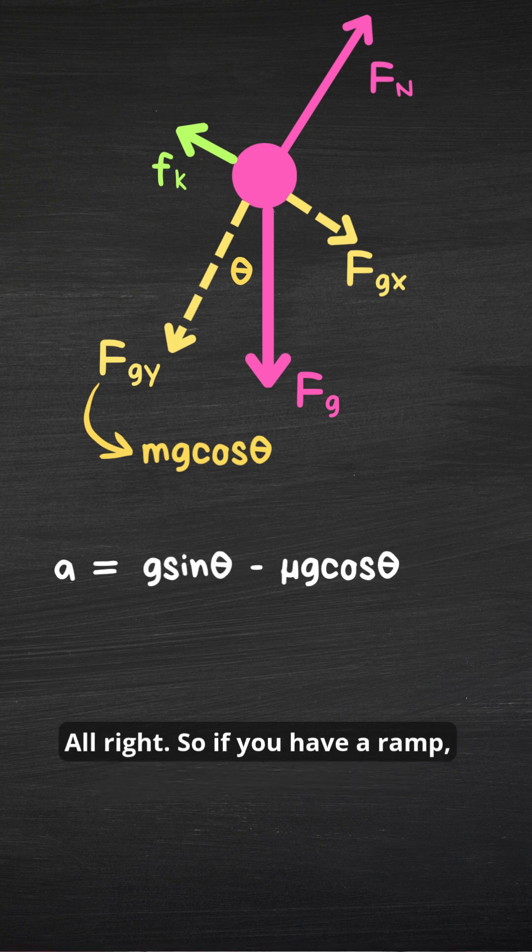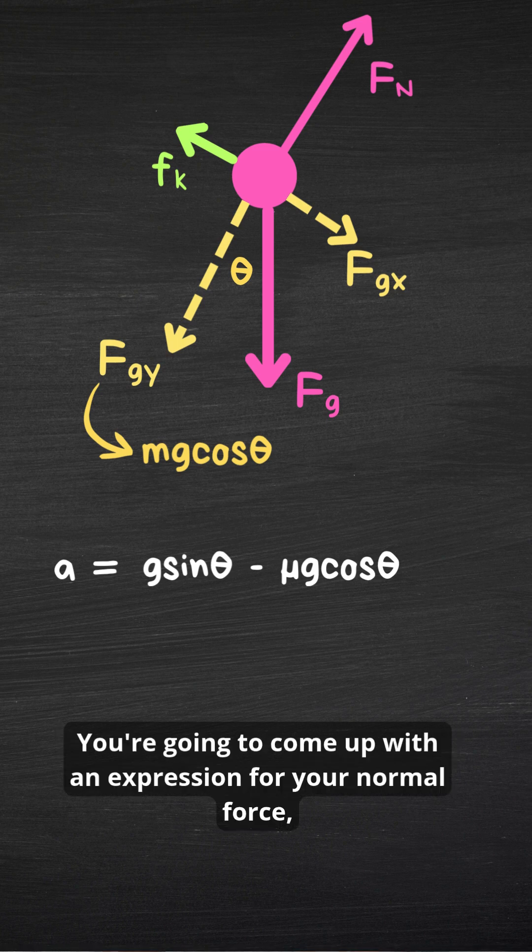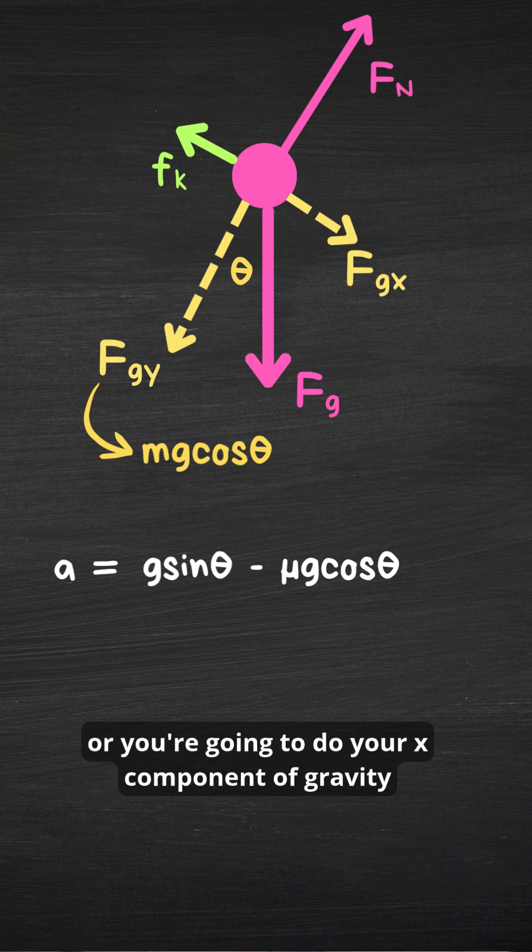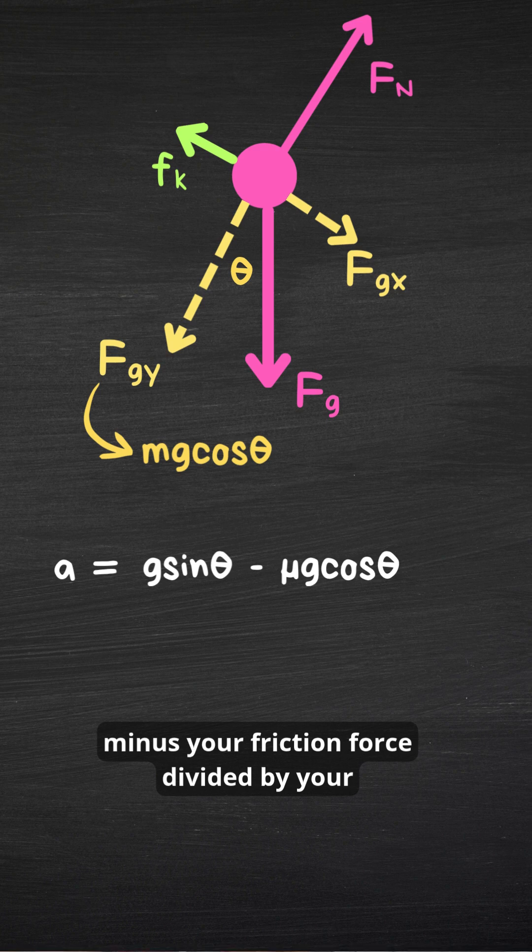All right. So if you have a ramp, you have a friction force and you want to find acceleration, that's how you're going to do it. You're going to come up with an expression for your normal force, for your friction force, and for your components of gravity so that you're going to do your x component of gravity minus your friction force divided by your mass.